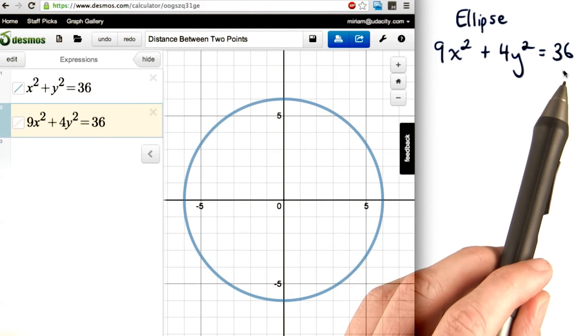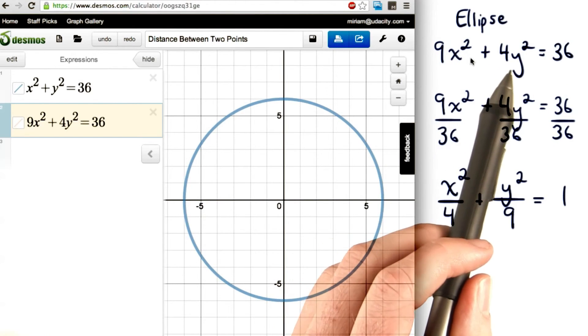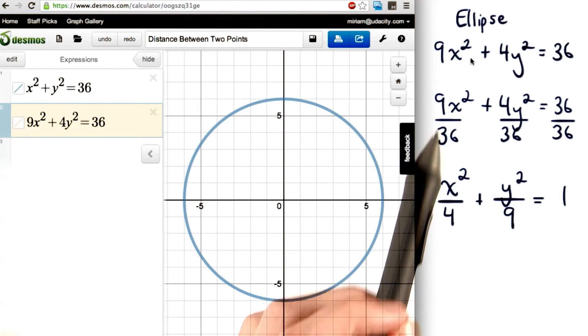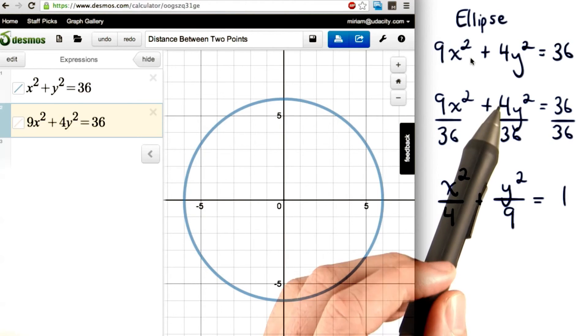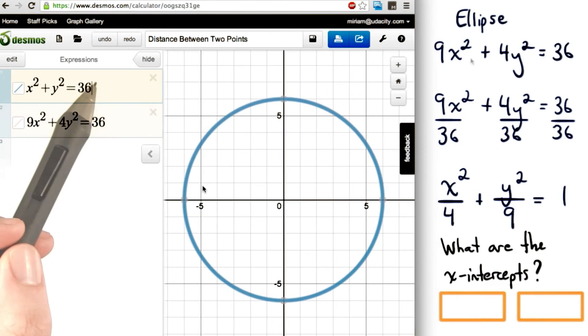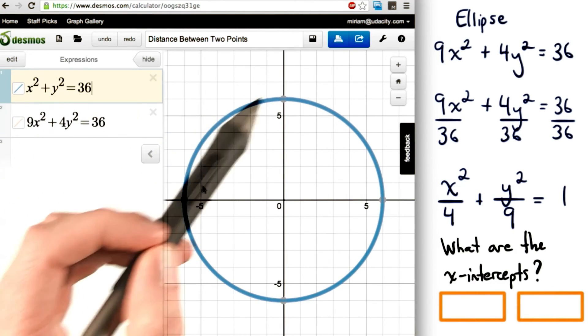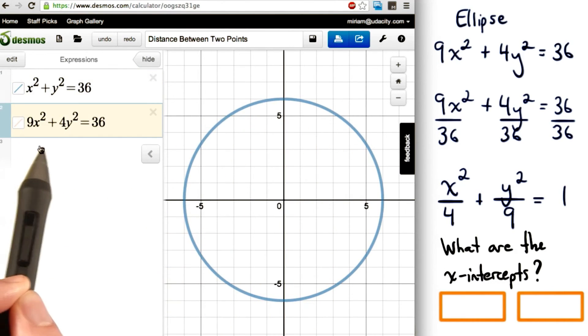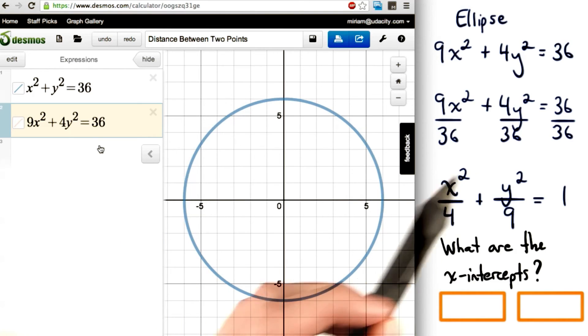First, we'll take the equation and divide through by the number 36. When we divide each term by 36, we'll get 1/4 x squared here, 1/9 y squared here, and 1 on the other side of the equal sign. So we're going to ignore our first equation of the circle for now. We've taken this equation and rearranged it into this.